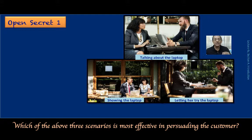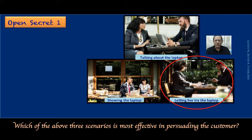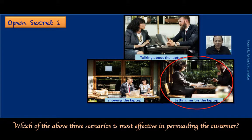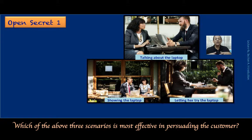So which of the three scenarios is most effective in persuading this customer? I'm sure you've guessed it — it's the last one. Letting her try the product is going to be the most persuasive. Why? Because when you give the customer your product or service and let them sample it, all five senses come into play, and those five senses produce an emotion — a liking or affinity for the product.